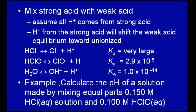Calculate the pH of a solution made by mixing equal parts of a strong acid, HCl, and 0.1 molar HClO. Now we're assuming that when you have a strong acid and a weak acid at about equal concentrations, most of the H⁺ comes from the strong acid, so really we only need to use the concentration of protons coming from that strong acid to calculate the pH. The number of protons coming from the weak acid we don't need to worry about.